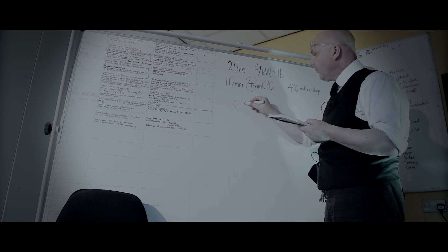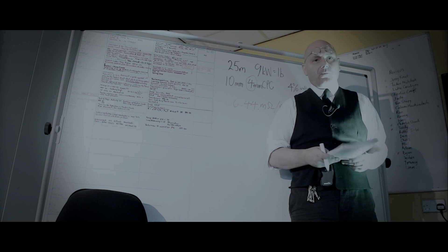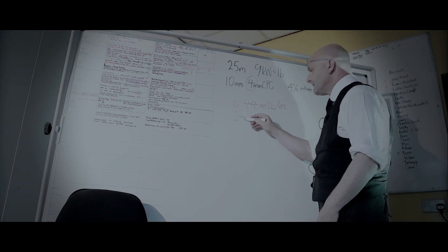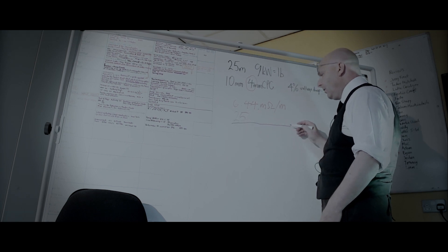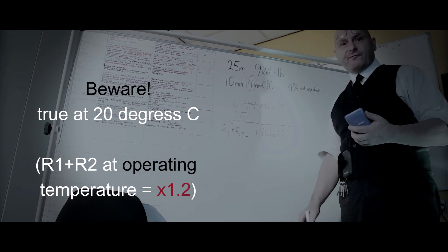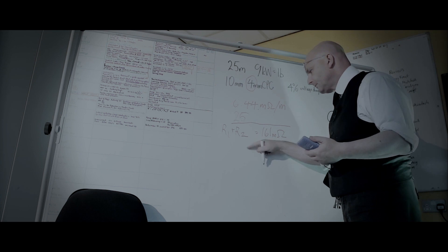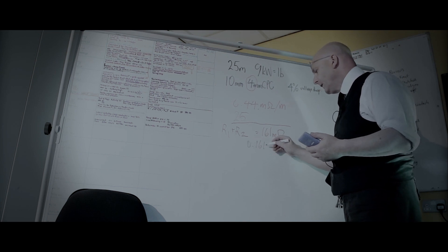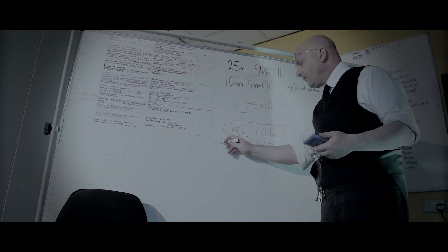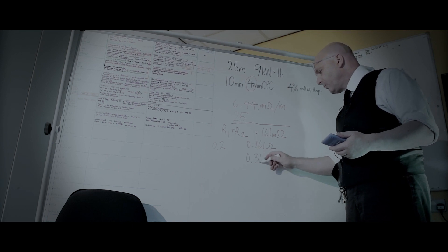It's 6.44 milliohms per meter. We can now work out, by multiplying it by 25, the total resistance of R1 plus R2. So we've got a very low resistance in that system: 0.161 ohms. We add our Ze to that — let's give ourselves a Ze of 0.2 — that's 0.361 ohms.